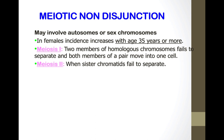Meiotic non-disjunction may involve autosomes or sex chromosomes — any chromosome can be affected. In females, the incidence increases with age above 35, and the most common chromosome for meiotic non-disjunction is chromosome 21. That is why women over age 35 are much more prone to having babies with Down syndrome. In meiosis 1, two members of homologous chromosomes fail to separate; in meiosis 2, sister chromatids fail to separate.